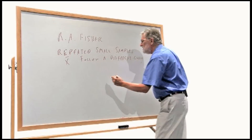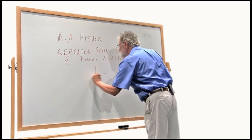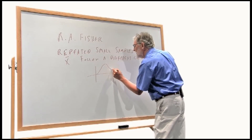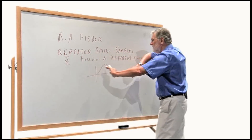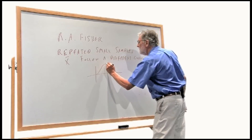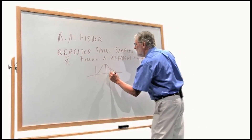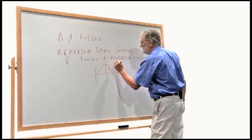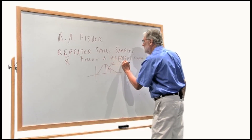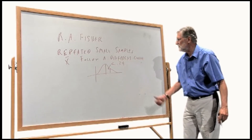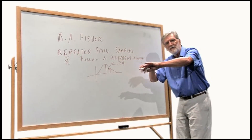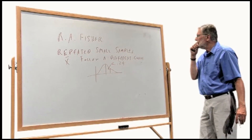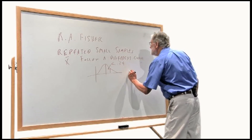This curve looks kind of like a normal curve, but it's kind of fatter. If you went out to where we expect the 34%, you'd get less — less than the 0.34 I talked about in the previous lecture. So more of the probability is out in the tails.